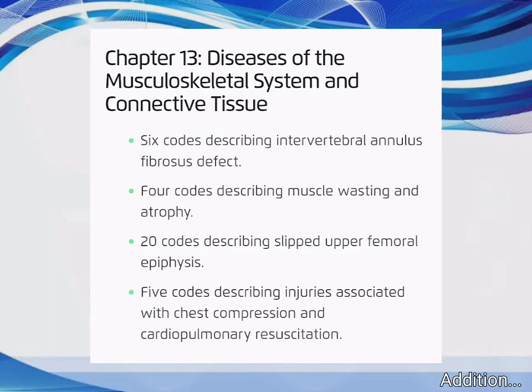Chapter 13 – Diseases of the Musculoskeletal System and Connective Tissue: 6 codes describing Intervertebral Annulus Fibrosis Defect, 4 codes describing Muscle Wasting and Atrophy, 20 codes describing Slipped Upper Femoral Epiphysis, and 5 codes describing Injuries Associated with Chest Compression and Cardiopulmonary Resuscitation.